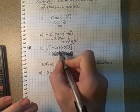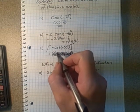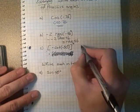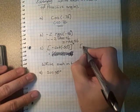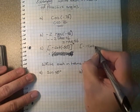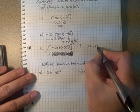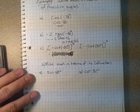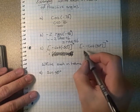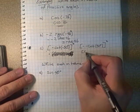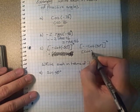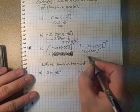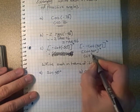We look at the cotangent reduction identity. The cotangent reduction identity puts the negative out in front, so that would be negative times negative cotan 50 degrees, all squared in square brackets. Two negatives together give us a positive, so that's just cotan of 50 degrees squared — or cotan squared 50 degrees.